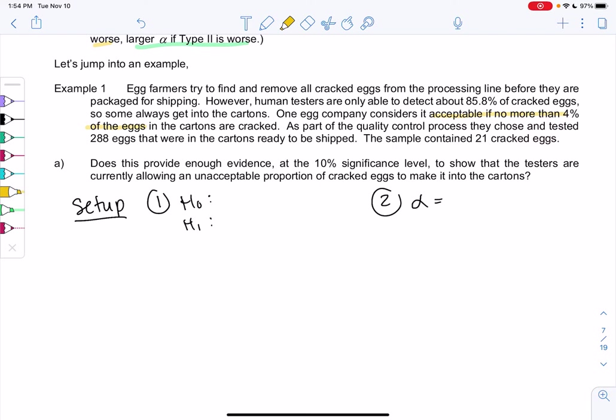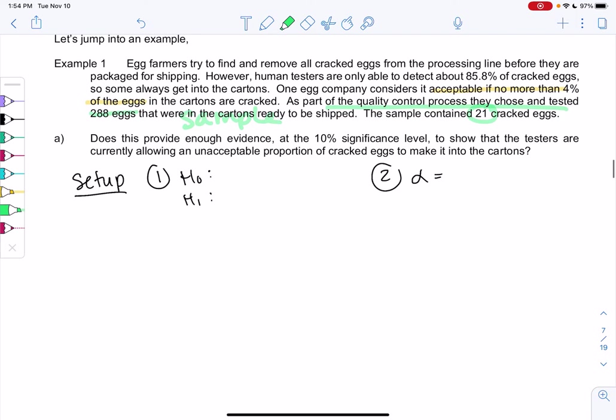One egg company considers it acceptable if no more than 4% of the eggs in the carton are cracked. As part of quality control process, they choose and tested 288 eggs. Quality control would be a sample. The sample had 21 cracked eggs. There's a lot of information. We'll take it piece by piece.